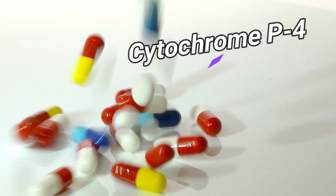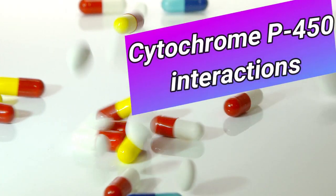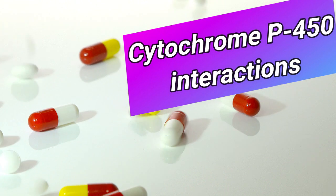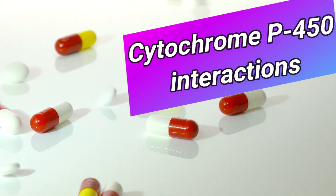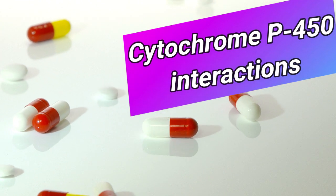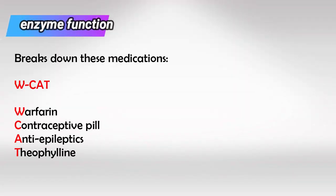Welcome back. In this video we'll talk about the function of cytochrome P450, and we'll have a mnemonic for all the inducers and inhibitors. Cytochrome P450 is an enzyme found in the liver, and it breaks down the following medications.